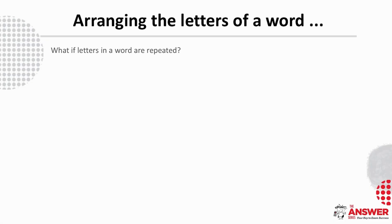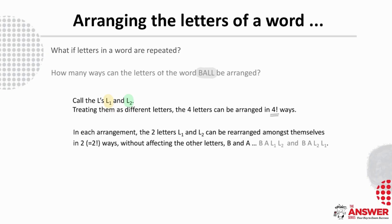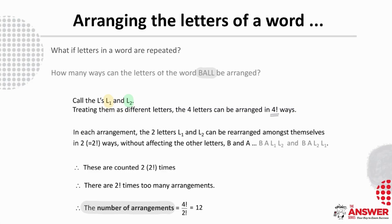What if letters in a word are repeated? Let's look at the word 'ball' and see how many ways these letters can be arranged. If we call the L's L1 and L2, treating them as different letters, these four letters can be arranged in four factorial ways. But in each arrangement, L1 and L2 can be rearranged amongst themselves in two factorial ways without affecting the other letters B and A. Therefore these are counted two factorial times too many, and the number of arrangements is four factorial over two factorial, which is 12.